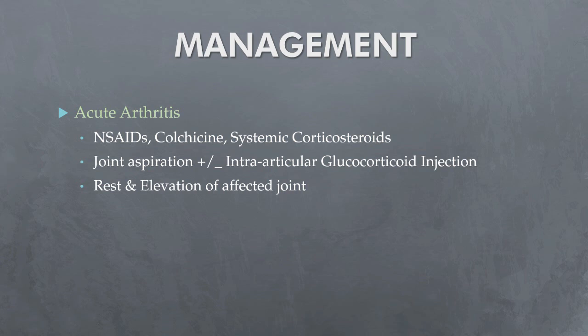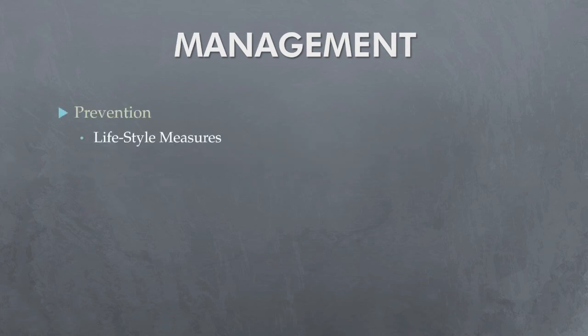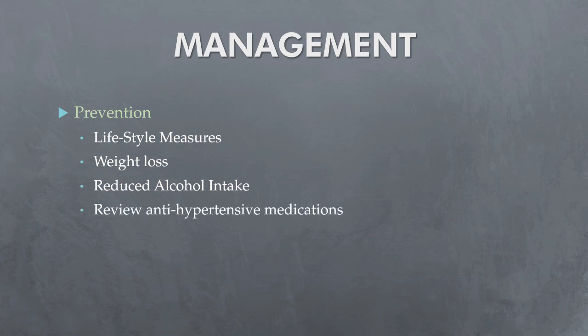Other supportive measures include rest and elevation of the affected joint. Local ice packs can also be used for symptomatic relief. For prevention, lifestyle measures including losing weight where appropriate and reducing excessive alcohol intake, especially beer, should be advised. Several antihypertensive drugs including thiazides, beta blockers, and ACE inhibitors increase serum uric acid levels, whereas losartan has a uricosuric effect and should be substituted for other drugs if possible. Patients should also be advised to avoid large amounts of seafood and offal, which have a high purine content, but a highly restrictive diet is not usually necessary.